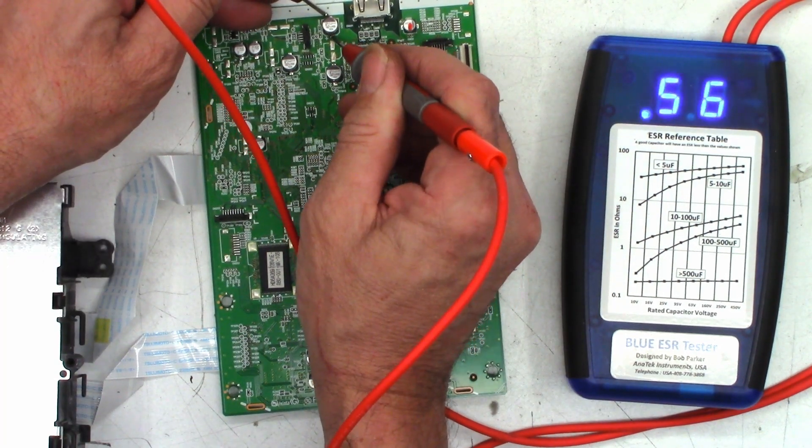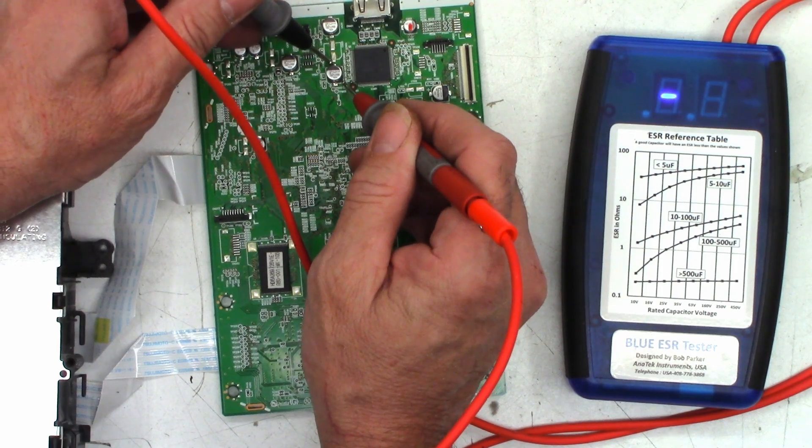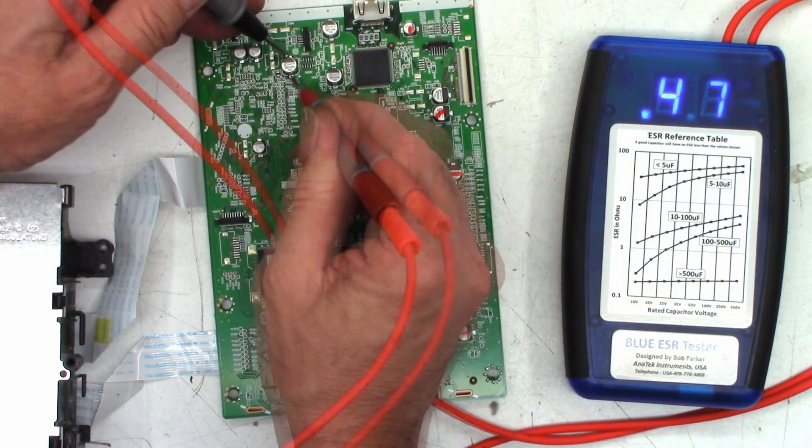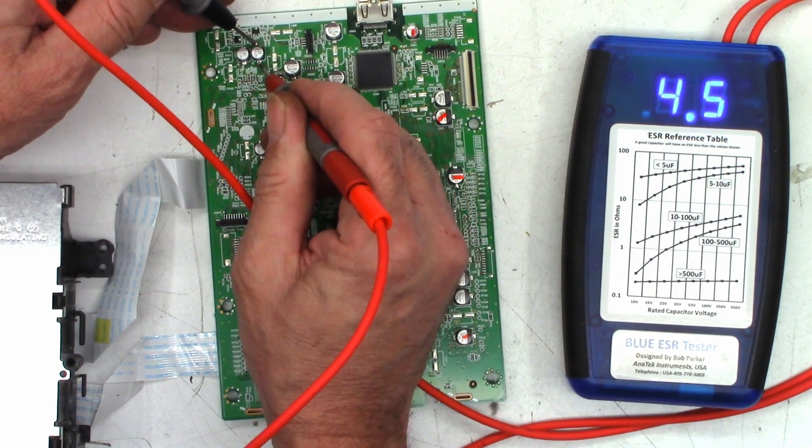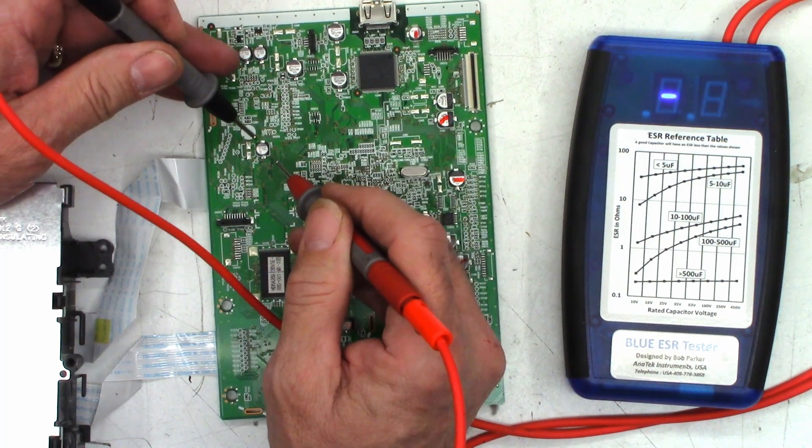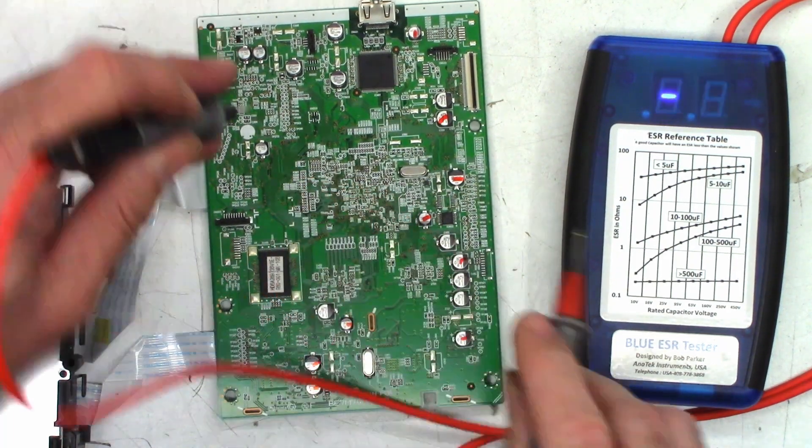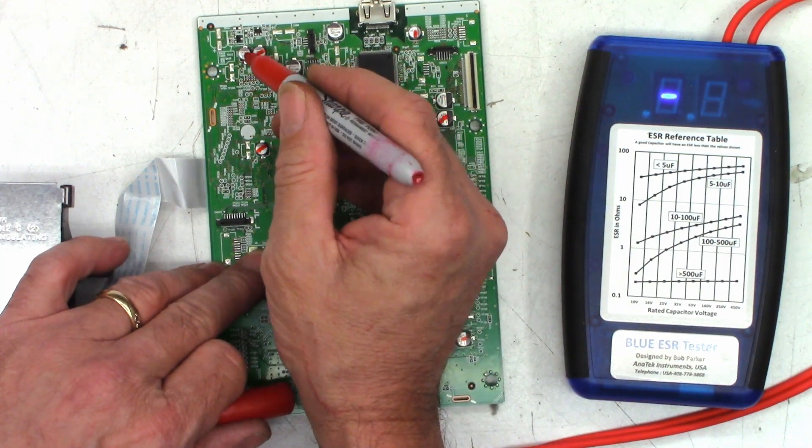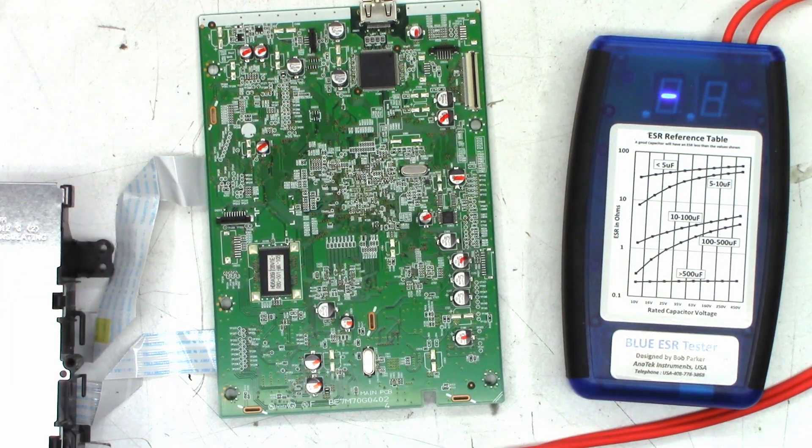47, once again, probably 1 ohm or less. 1.9, nope. Another 330, 0.5, I'm good with 0.5. That's about the limit. 0.3, totally happy with 0.3. 0.4, that's okay. 4.5, you're out of here for a 47. 2.5, I think I'll change that just to be safe. And 3 ohms, I'd like to change all of those 47s. So out of 20 capacitors, 12 of those I have deemed bad.